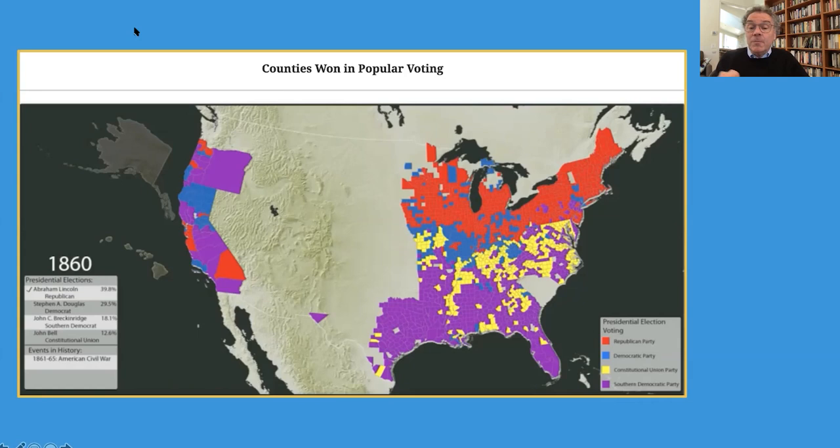It's interesting too — we think of Oregon and California today as very liberal, but here they voted for the strong Democratic Southern candidate. So it's pretty complicated. This also explains the delay in what happened after the election of 1860. The states in the Deep South — the seven states along the Gulf Coast — seceded in December and January, but the states of the Upper South delayed.